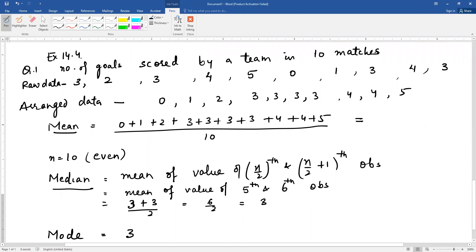Now see here in the arranged data, which is the fifth observation? One, two, three, four, five. This is the fifth observation, and this is the sixth observation. Put the values of both: 3 plus 3. And to find the mean, divide by 2. 6 by 2, that is 3, so the median is 3.